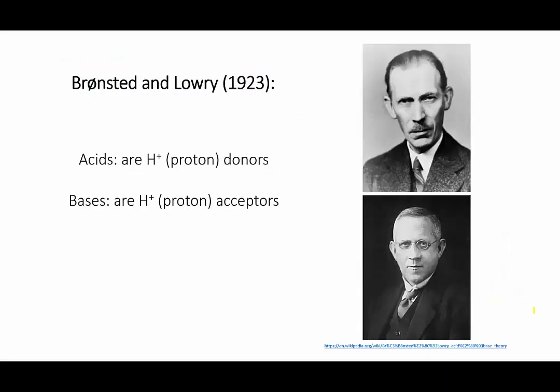Before going into examples, I want to remind you of Brønsted and Lowry's definitions of acids and bases, because we'll look at each reaction example in the context of these definitions. An acid is a chemical that, when it reacts, donates a proton — a hydrogen ion — to something else; that is, it will lose a proton itself. Bases are the opposite: something that accepts a proton during a chemical reaction.